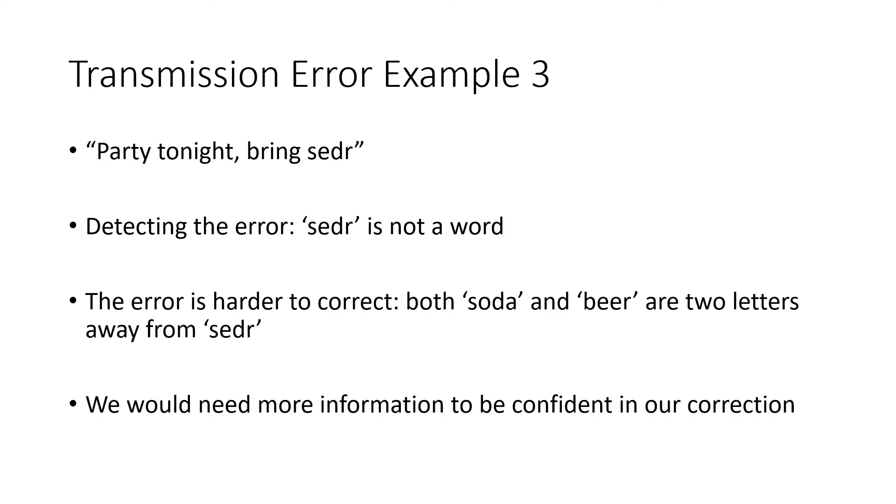Let's look at this example. Party tonight, bring, and we see the sequence of letters S-E-D-R. Again, we detect the error. We can tell that something is wrong because we know that's not a word. But this one's a little harder to correct, because soda, S-O-D-A, that's two letters away, if we change the E to an O and we change the R to an A, that becomes soda. But the word beer is also two letters away. If we change the S to a B and this D to an E, then this word becomes beer. So we're not entirely sure how to correct this error, because we're not 100% sure what our friend who sent us this message meant. We'd need more information to be confident in how we would correct this error.